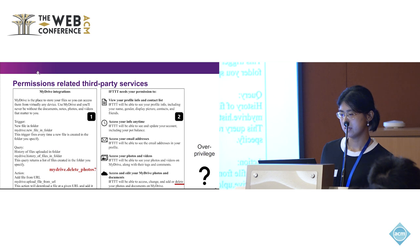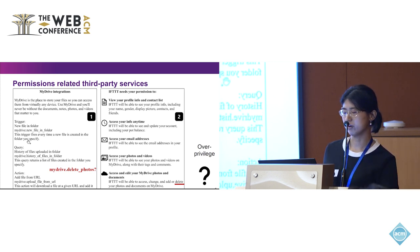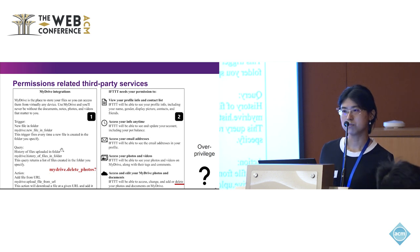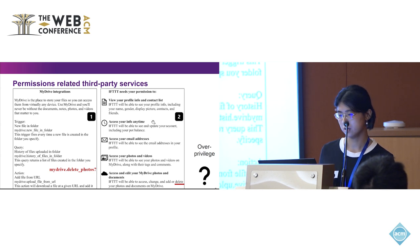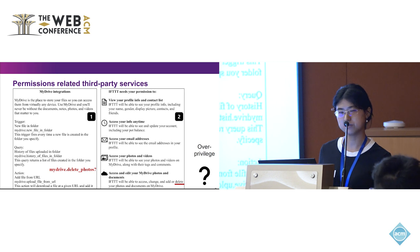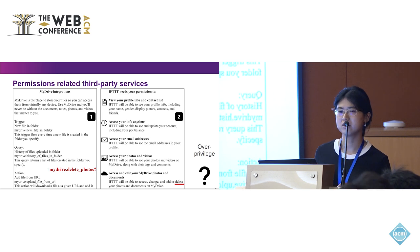The left side represents the APIs exposed for TIE by the service MyDrive. TIE can use these APIs to query new files in a folder, the history of files, and even upload files from a URL to a specific folder. To perform these actions, TIE needs user authorization — like IFTTT being able to see your photos and videos. But looking closer, there is a permission called 'delete your photos,' yet no API called MyDriveDeletePhoto exists. This is clearly an overprivileged permission.